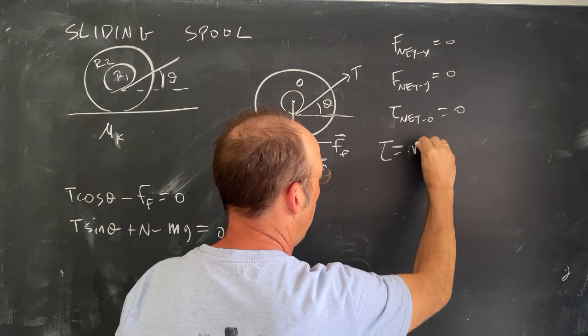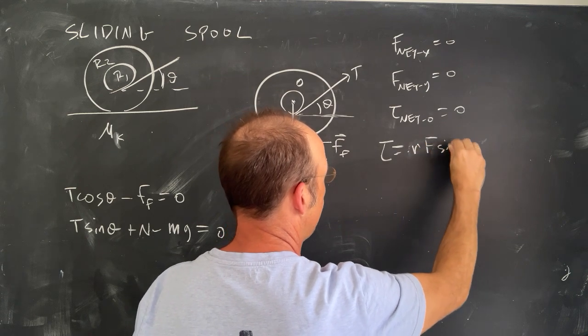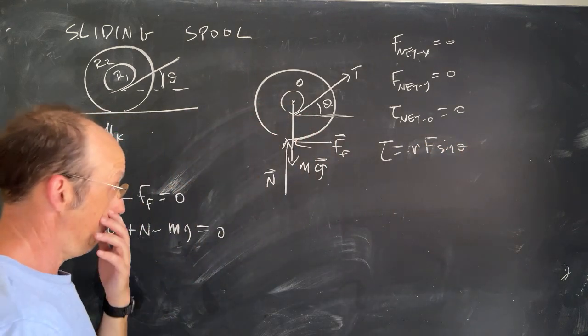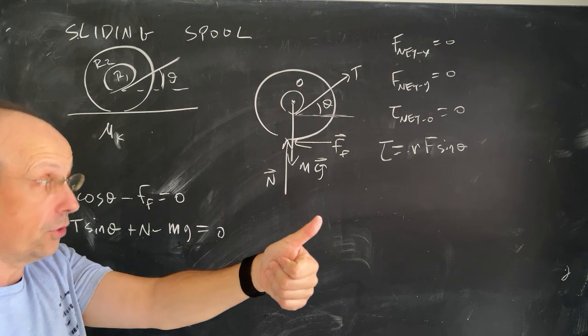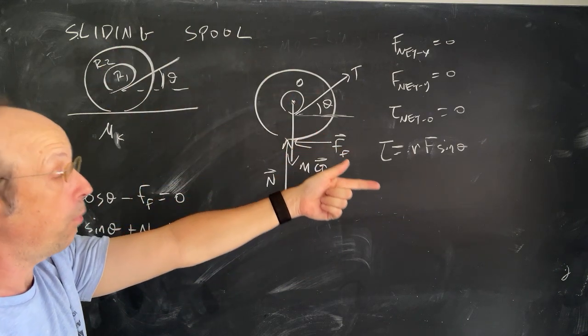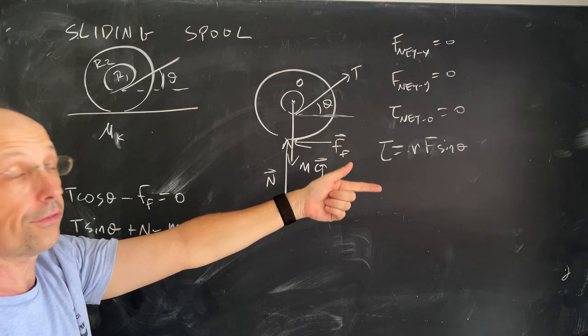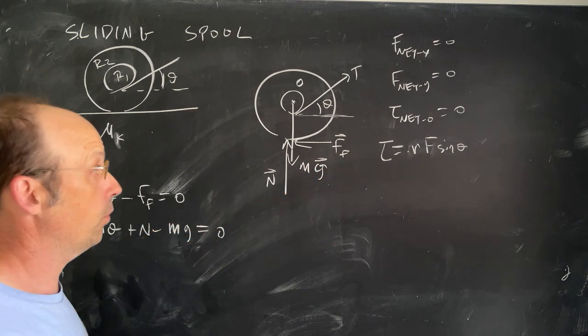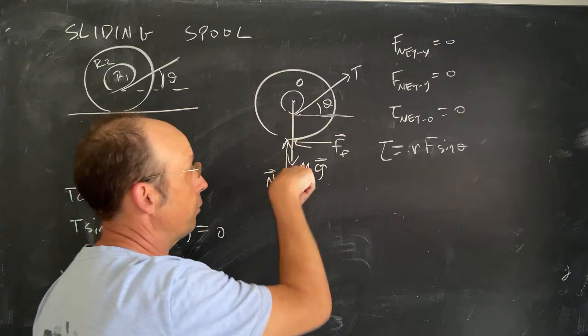So remember that torque is R F sine theta. That's very messy. So F is the applied force. R is the distance from the point O to where the force is applied. And theta is the angle between them. So let's look at all these forces first.